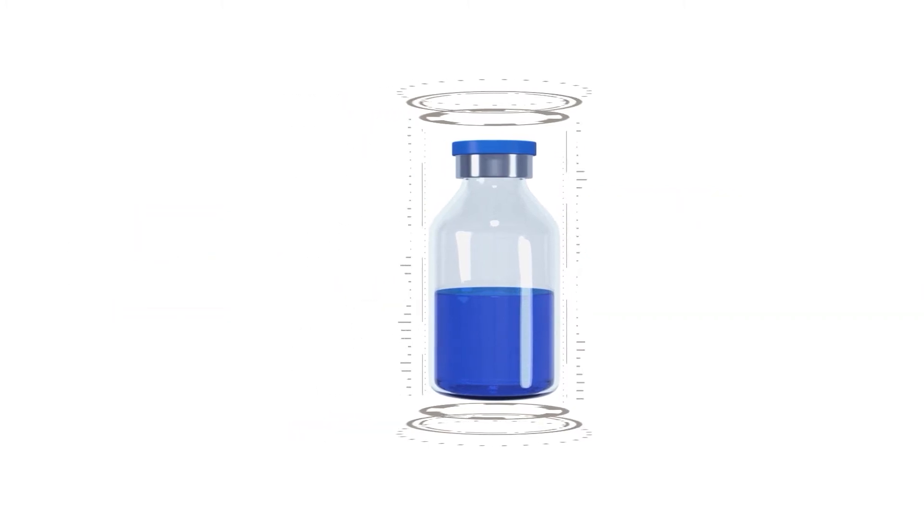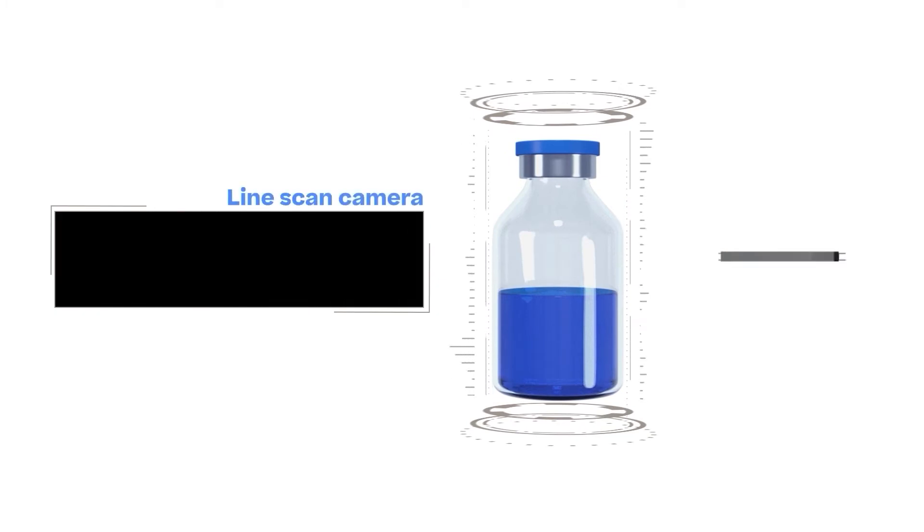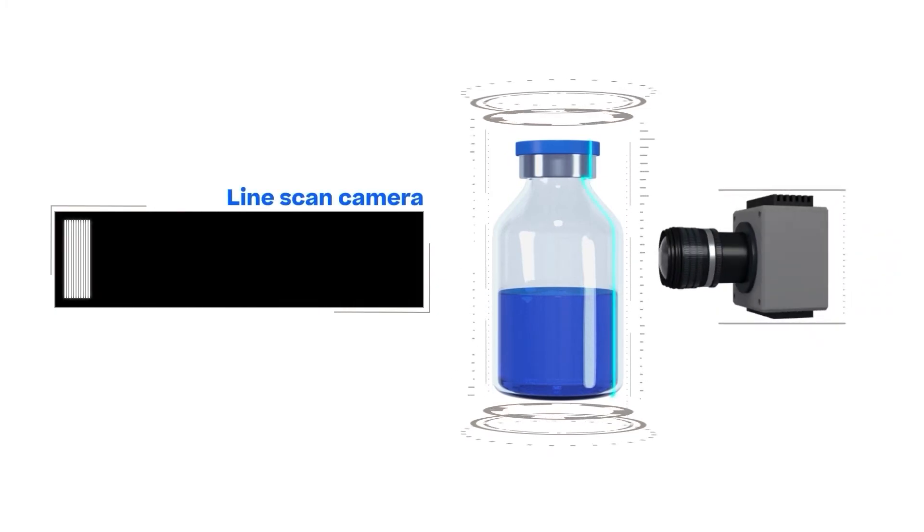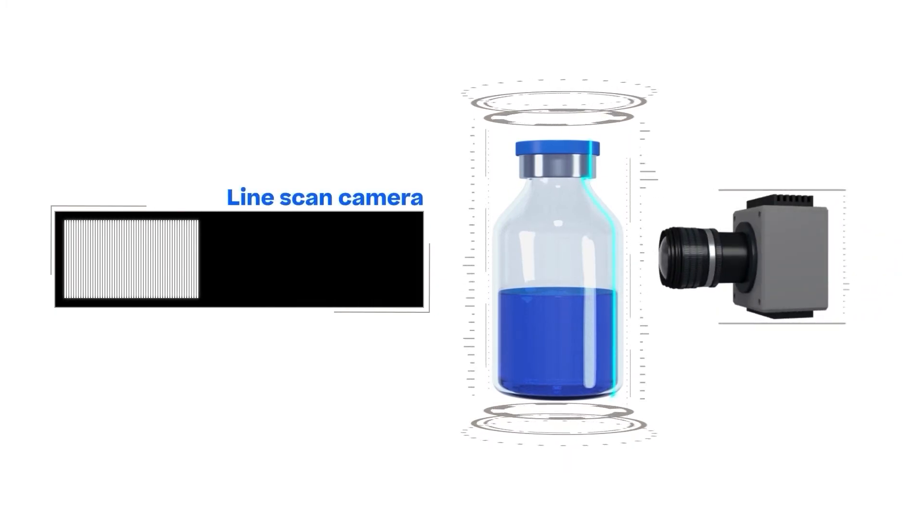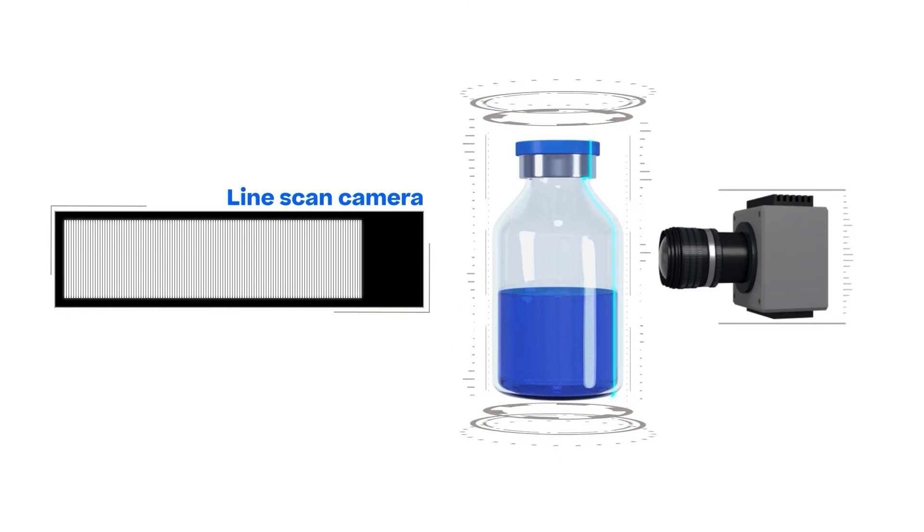The line scan camera on the other hand captures line by line so that an image is created from about a thousand exposures. This avoids distortions when taking pictures of cylindrical objects.